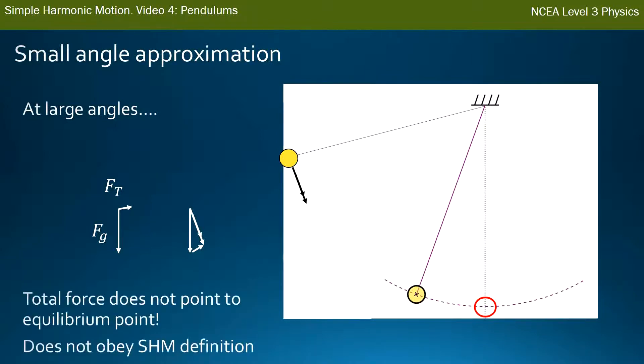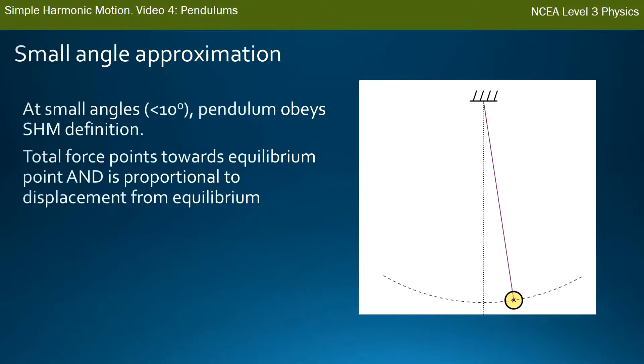And so, when we get to larger and larger angles with pendulums, the total force does not point to the equilibrium point. So it does not obey the Simple Harmonic Motion definition. And so for that reason, we only deal with pendulums that are swinging with quite small angles. And we say, less than 10 degrees.